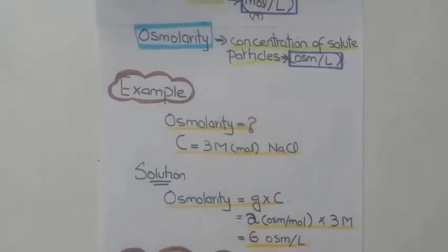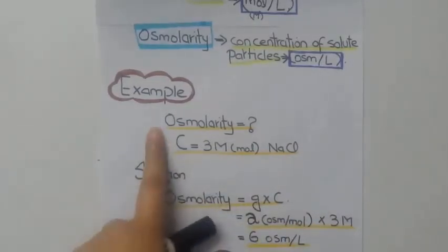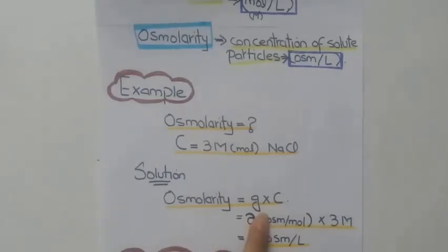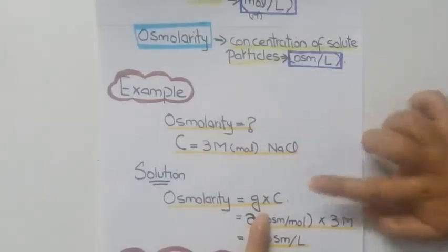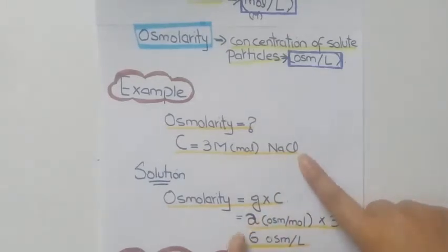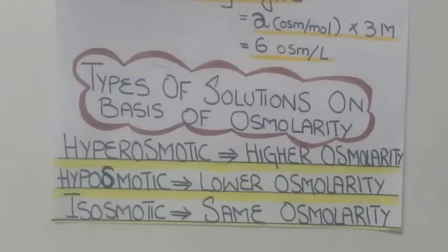The formula used to calculate osmolarity is: Osmolarity = g × c, where g is the total number of solute particles in solution (in osmol per mole) and c is the concentration of solute (in moles per liter). For example, if the solute is NaCl at a concentration of 3 moles per liter, g equals 2 because NaCl dissociates into two ions — sodium and chloride. So osmolarity = 2 × 3 = 6 osmol per liter.